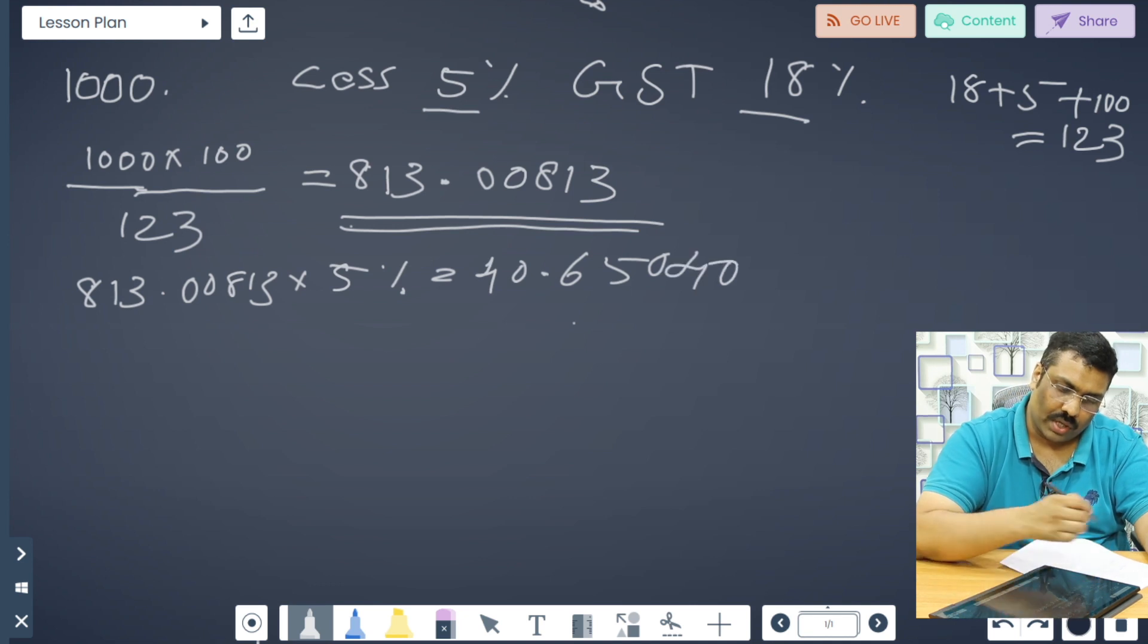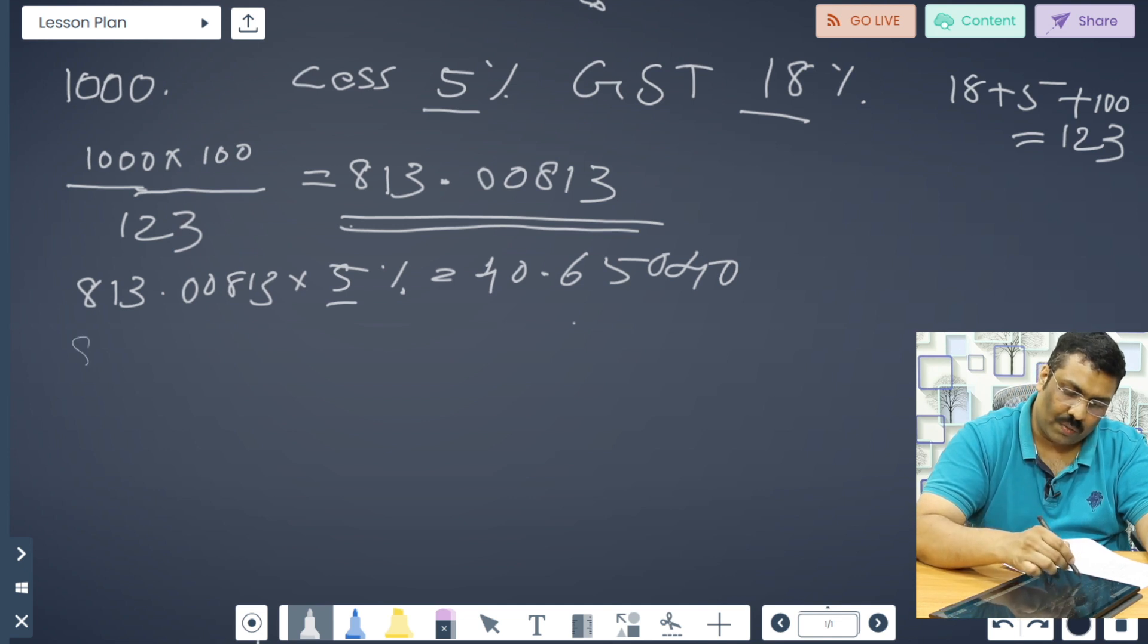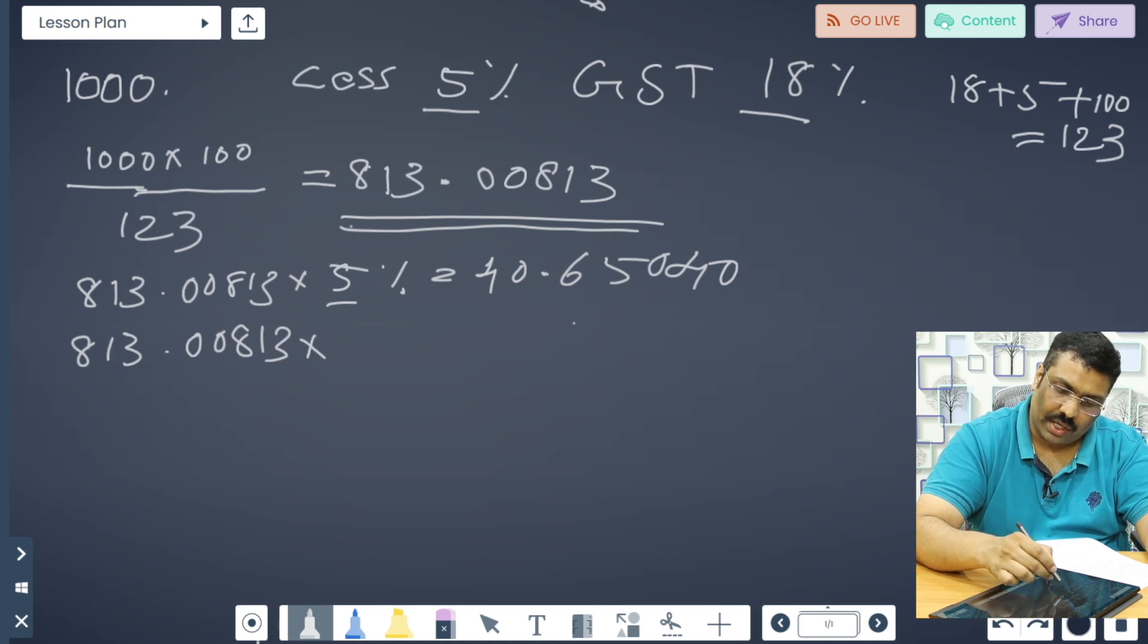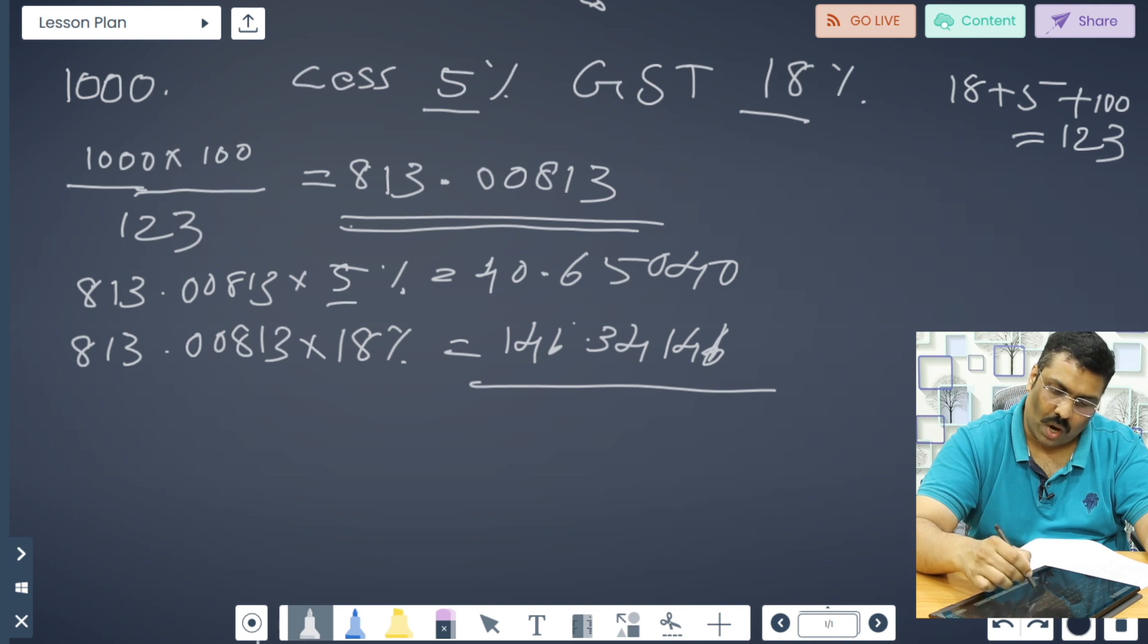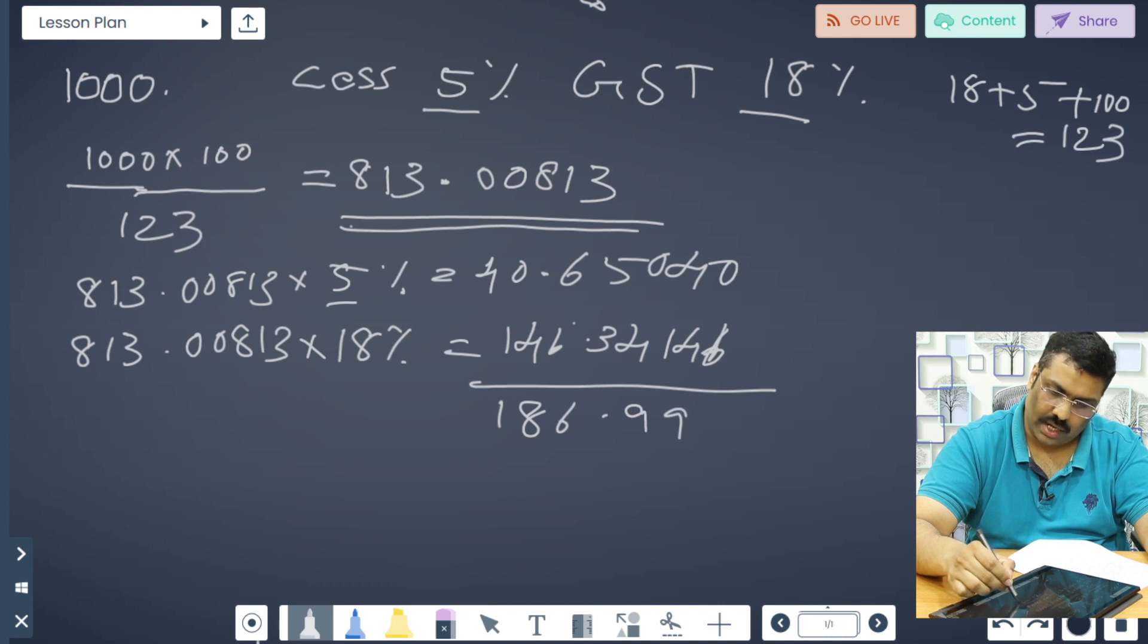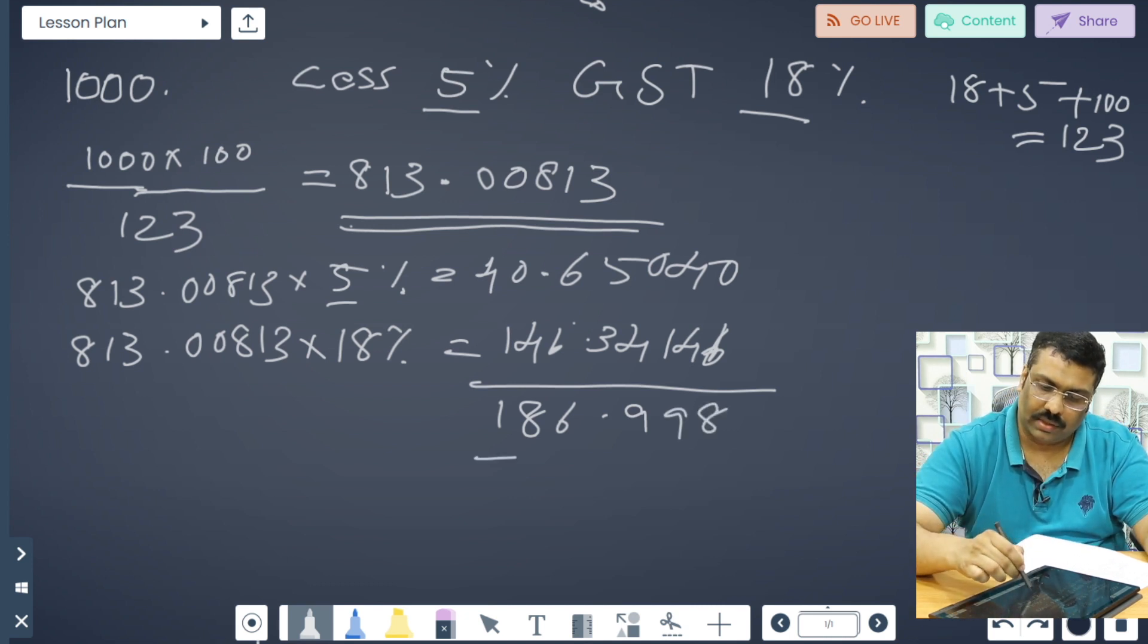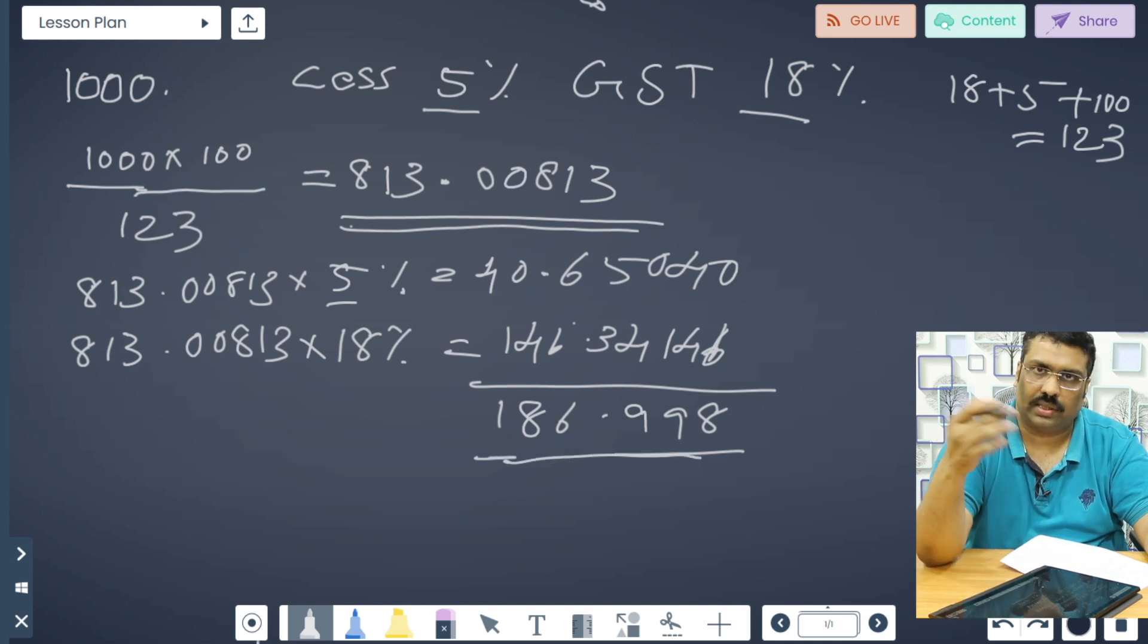And again, this is 5 percent only we calculated. We need to calculate again 18 percentage. 813.00813 into 18 percentage is equal to 146.34146. It will be 186.998. So this is the tax including both CESS plus GST.